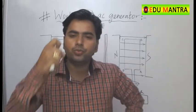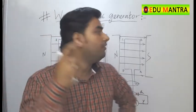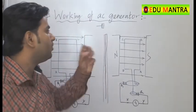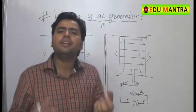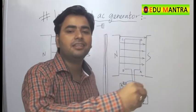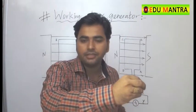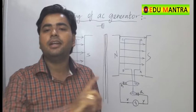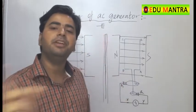We are going to study the working of the AC generator — the alternating current generator. What is alternating current? It is current in which the direction is reversed — in one direction, then the other direction, the opposite direction — where the current direction alternately reverses.